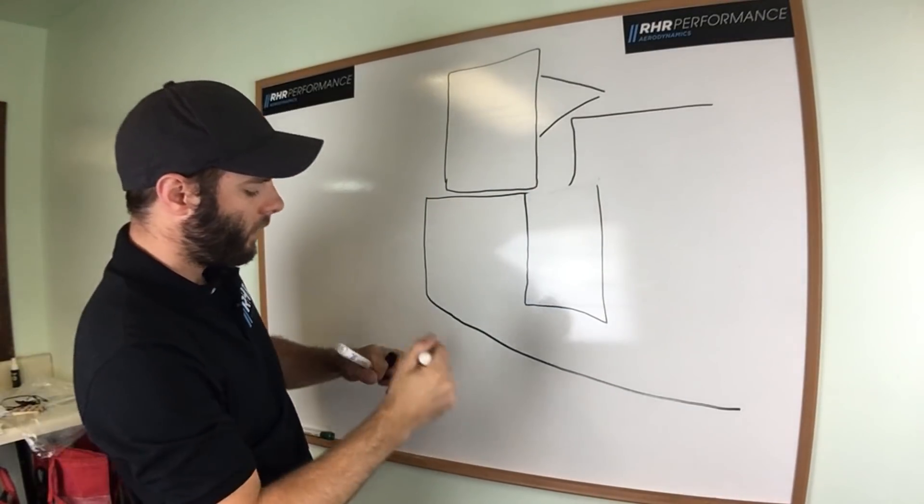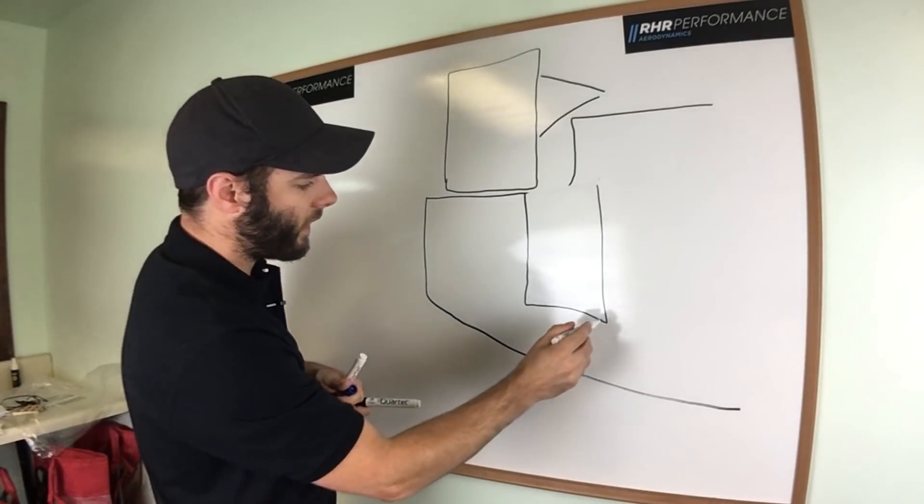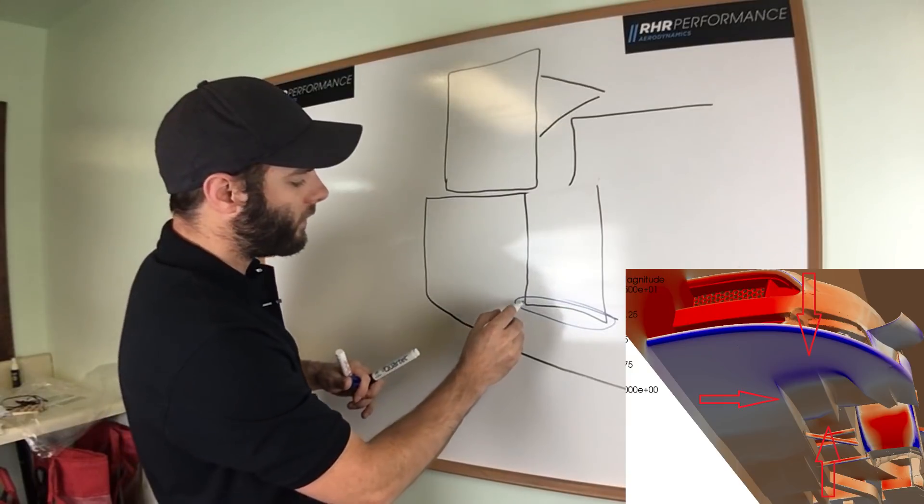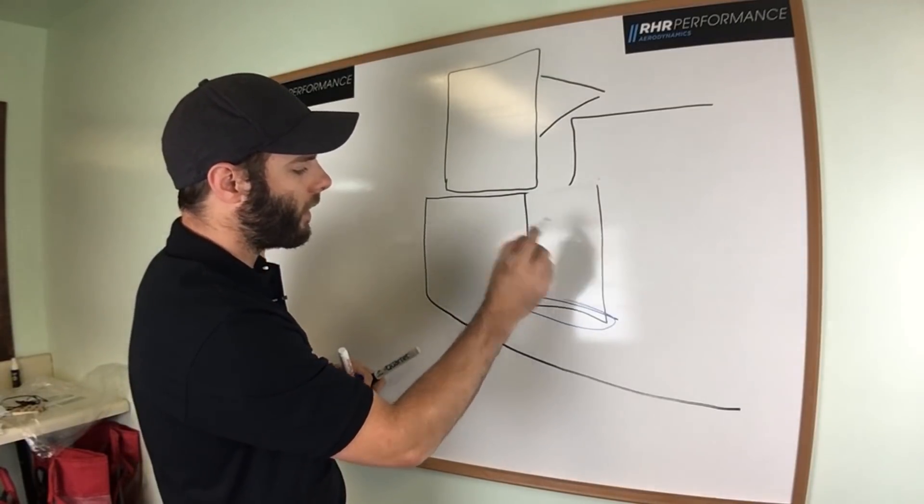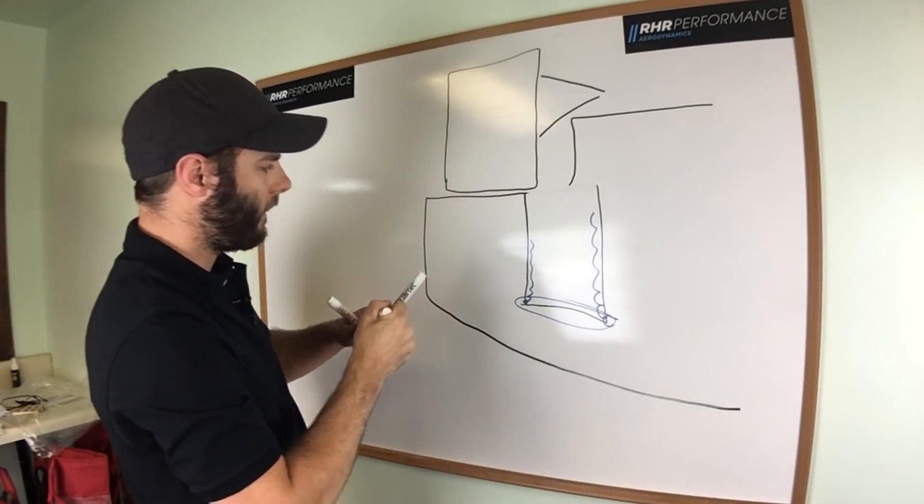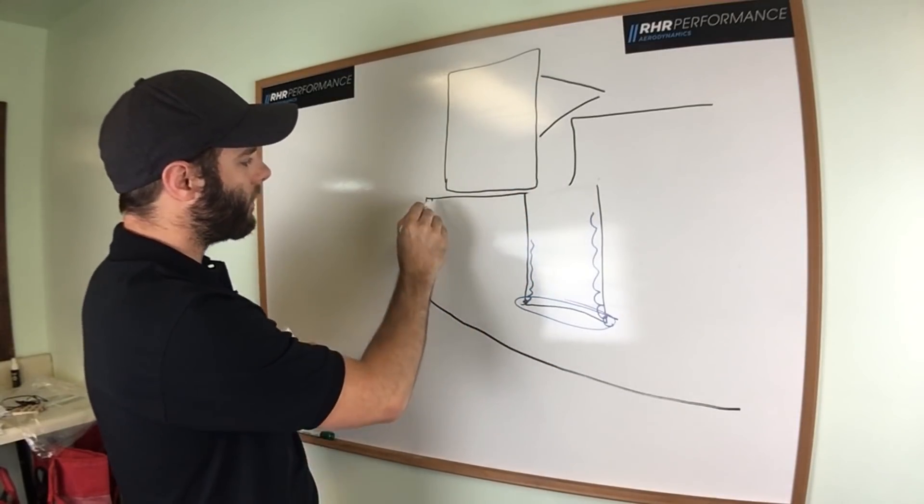Again, the low pressure zone wants to happen around this area. The vortices we were talking about earlier want to come in and travel down the sides of the tunnel. And also, like mentioned earlier,